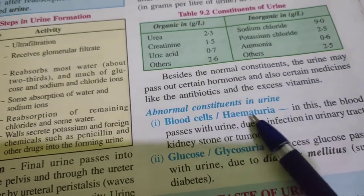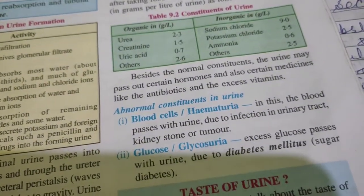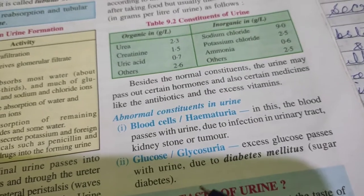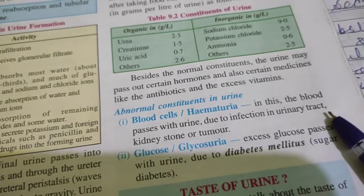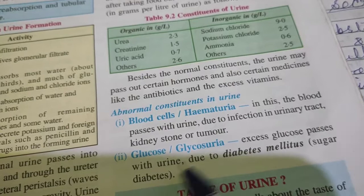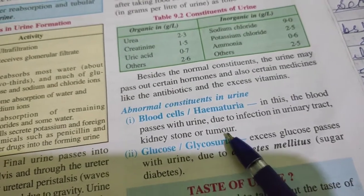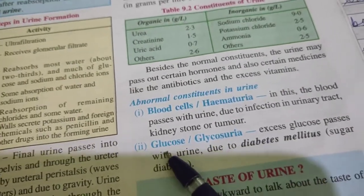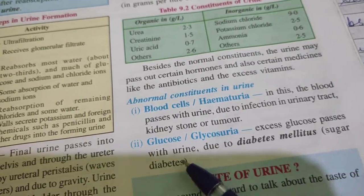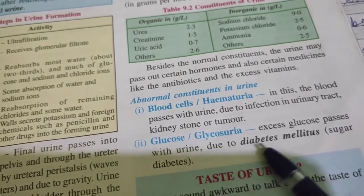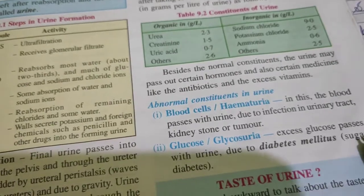Blood cells — hematuria. In this condition, blood passes with urine. This is because of some infection in the urinary tract, or some kidney stone, or tumor. Glucose: excess glucose passes with urine. This condition is called diabetes mellitus or sugar diabetes.